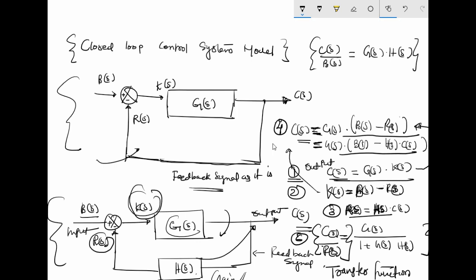So this is how you can represent a closed loop control system using a block diagram. The sixth equation derived here gives the transfer function for the whole circuit.